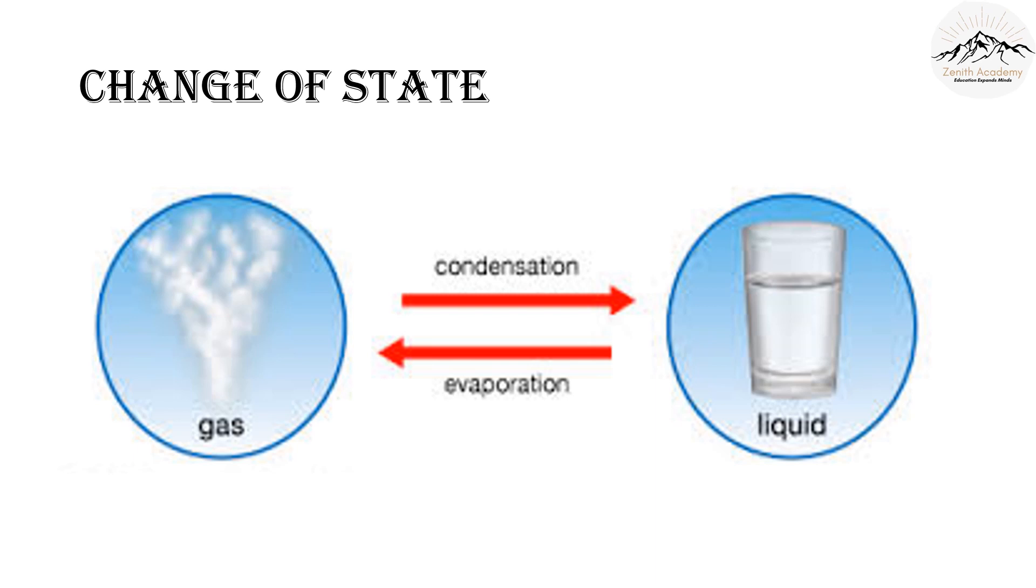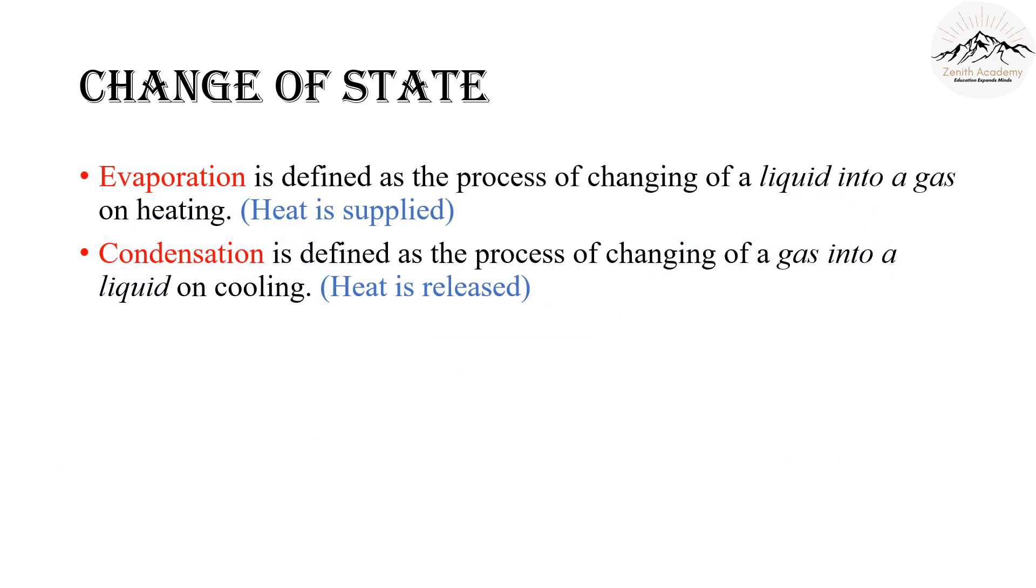Now let's learn about the change of state. Change of state is initiated by supply of heat or taking away of heat. There are some processes that are responsible for these changes. Let's take a look at these processes. As you can see, when heat is taken away from gas or heat is released from gas, it changes to liquid state and is called condensation. When heat is given to liquid, like when liquid is boiled, it changes to gaseous state and this is known as evaporation. Let's look at the definition. Evaporation is defined as the process of changing of liquid into a gas on heating. In this case, heat is supplied. Condensation is defined as the process of changing of gas into a liquid on cooling. In this case, heat is released.